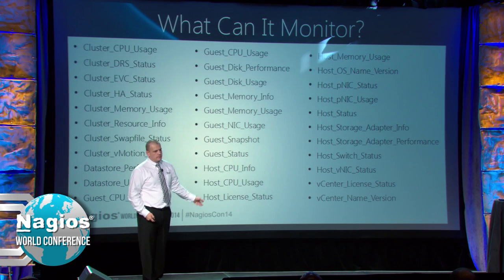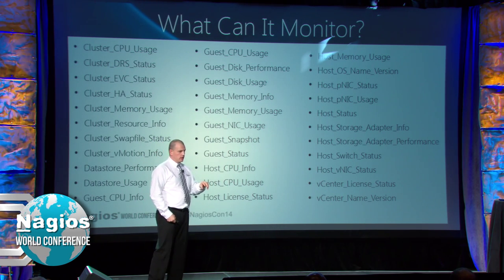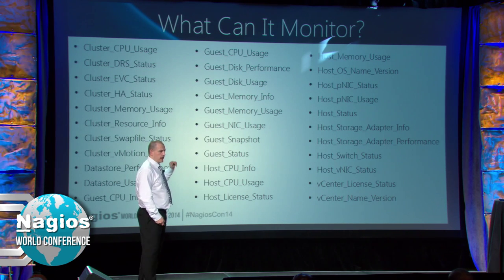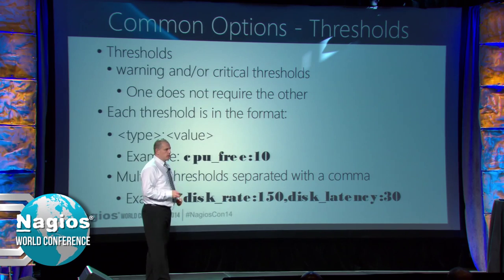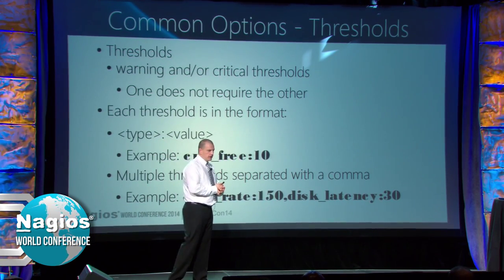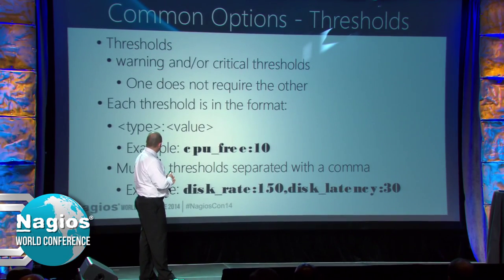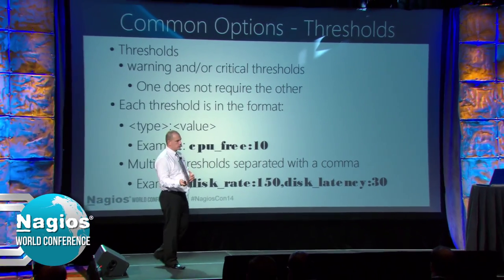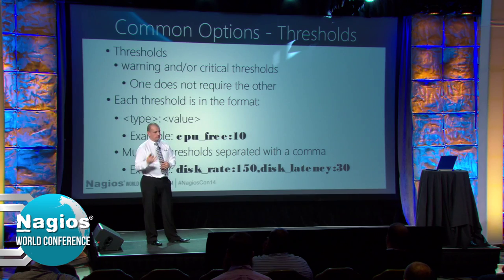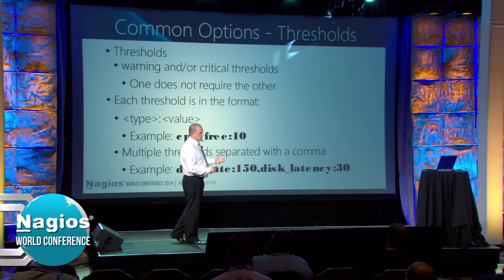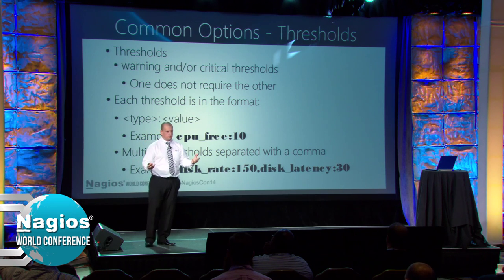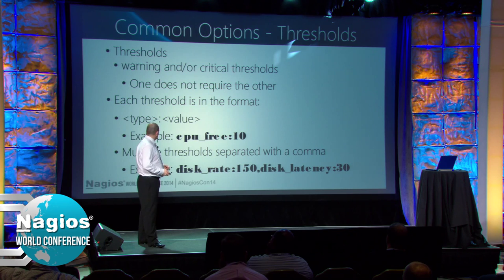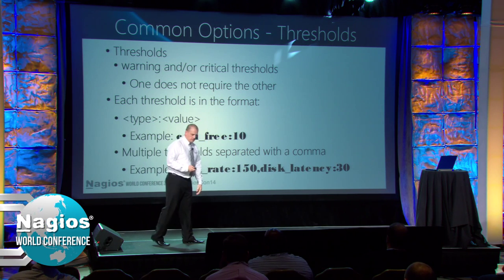We're going to go through all the different checks and what they can do. Before I do that, there are some common options I've added to the plugin. One of them is thresholds - I wanted to be able to specify the warning and criticals, and you don't have to have a warning to have a critical. You can have some checks such as disk rate and disk latency - two different things you're checking against - so you want two different thresholds to alert against whether it's warning or critical. You can combine those together with a comma.